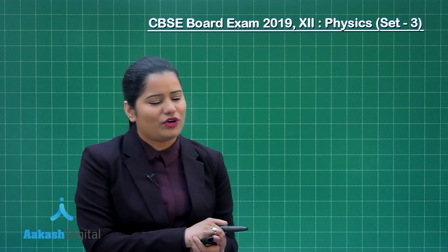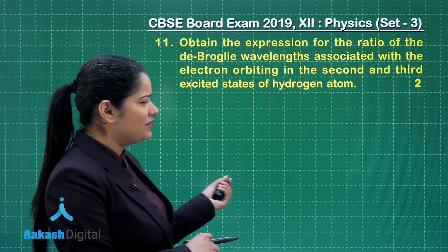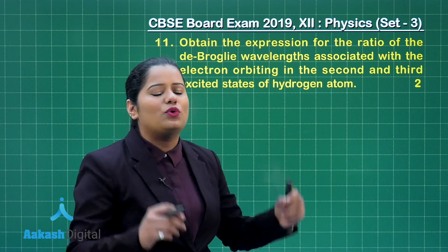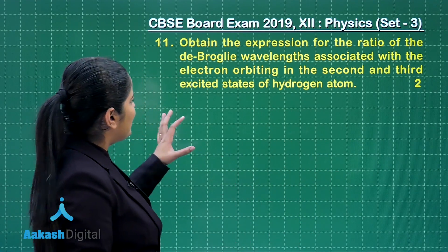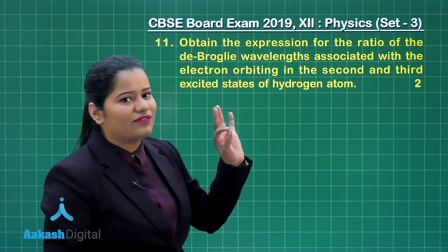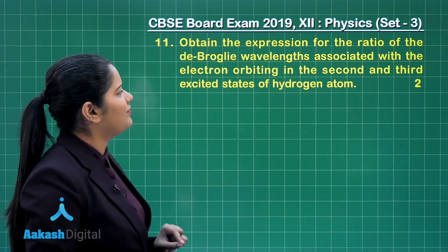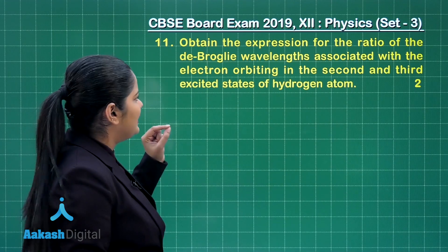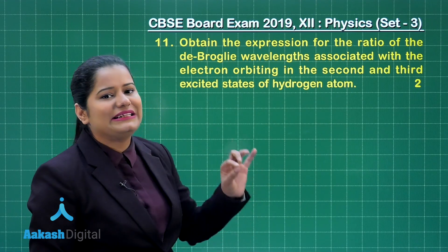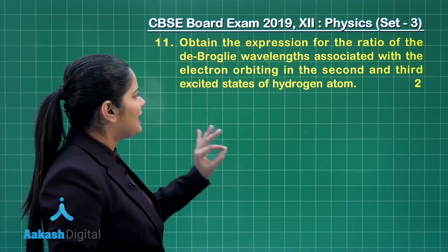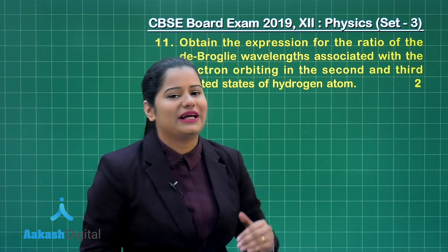Let us take up question number 11 for discussion. This question holds two marks. It says: obtain the expression for the ratio of the de Broglie wavelengths associated with the electron orbiting in the second and third excited state of hydrogen atom.